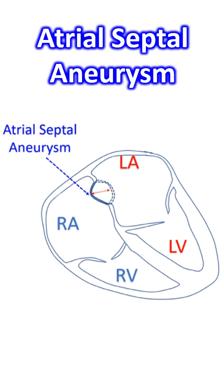By Hanley's Criteria, it is often associated with the patent foramen ovale. It is one of the predisposing factors for paradoxical embolism and stroke. Atrial septal aneurysms can occur in up to 2% of the population.